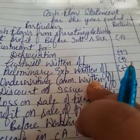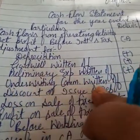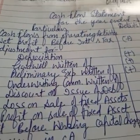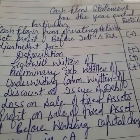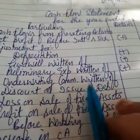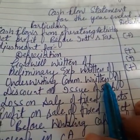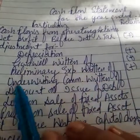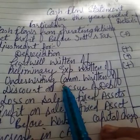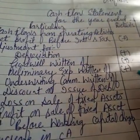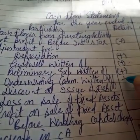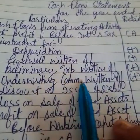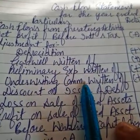Underwriting commission is an expense, but it is paid at the time of issue of shares or debentures. So it must be considered under financing activity at the time of issue of shares and debentures. Since it is already shown there, we do not consider any transaction twice, so we add it back here because it is already deducted under financing activity.